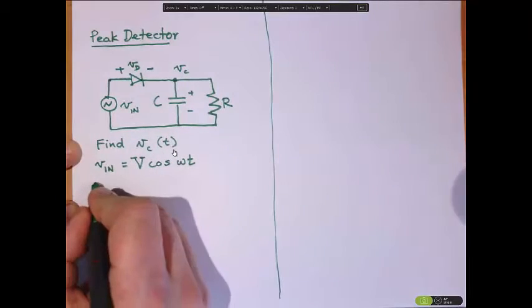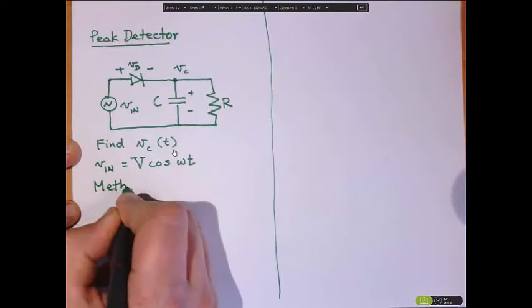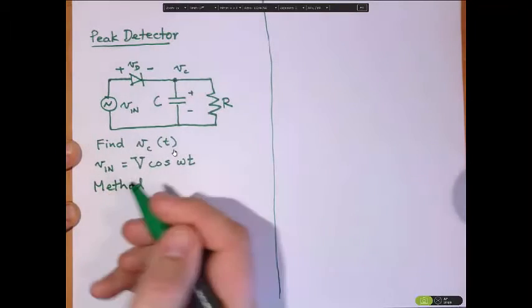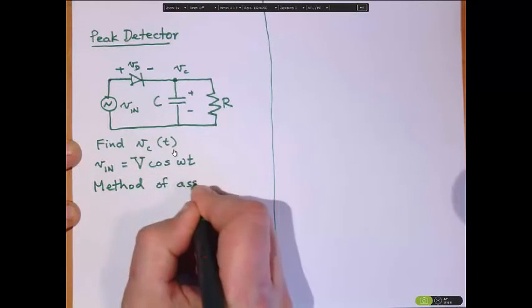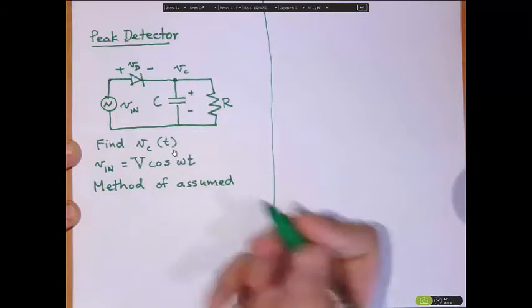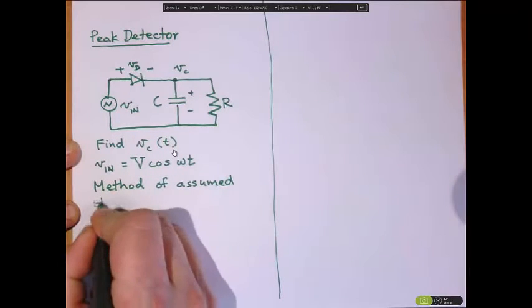So we're going to use the method of assumed states. Just to remind you of that, you kind of make a guess what the possible states of the diode are. And then you solve each of those states and you figure out where the transition is between them.